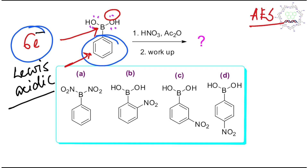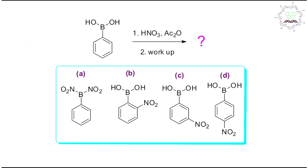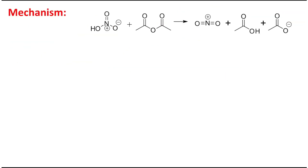The second case: look at the reagent — nitric acid and acetic anhydride. This is also a nitration reagent; it is actually a milder nitration reagent. Let us learn how it produces the electrophile, NO₂⁺. The first step is the generation of the electrophile.